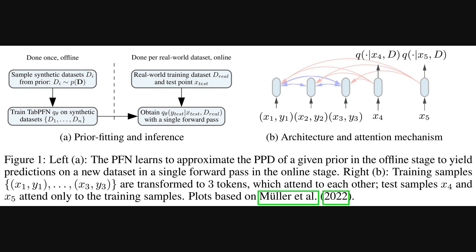Then the online part is what happens when you have a real dataset. You just feed the training data and the test points into the already trained Tab PFN, and boom, you get predictions in one go. The right side shows a bit about the architecture — how the training samples and test samples are processed, and importantly, how the test points attend to the training samples to make their predictions.